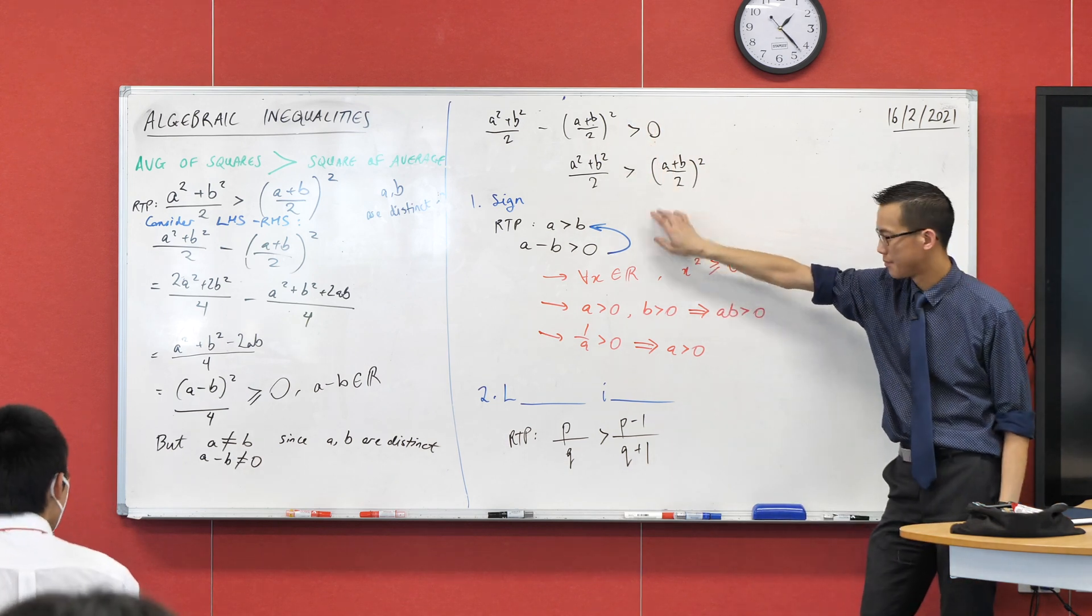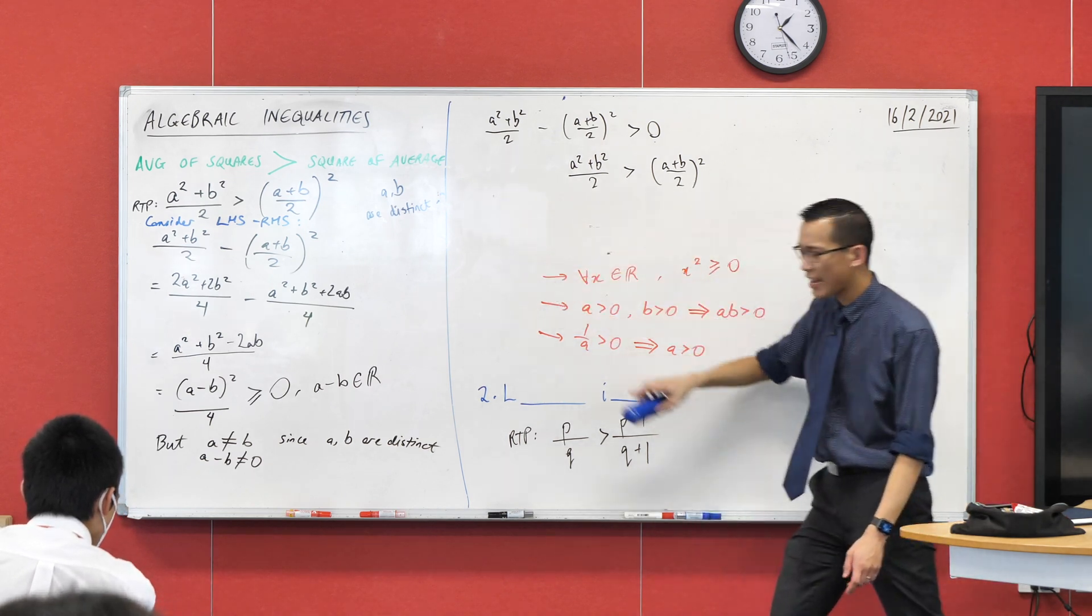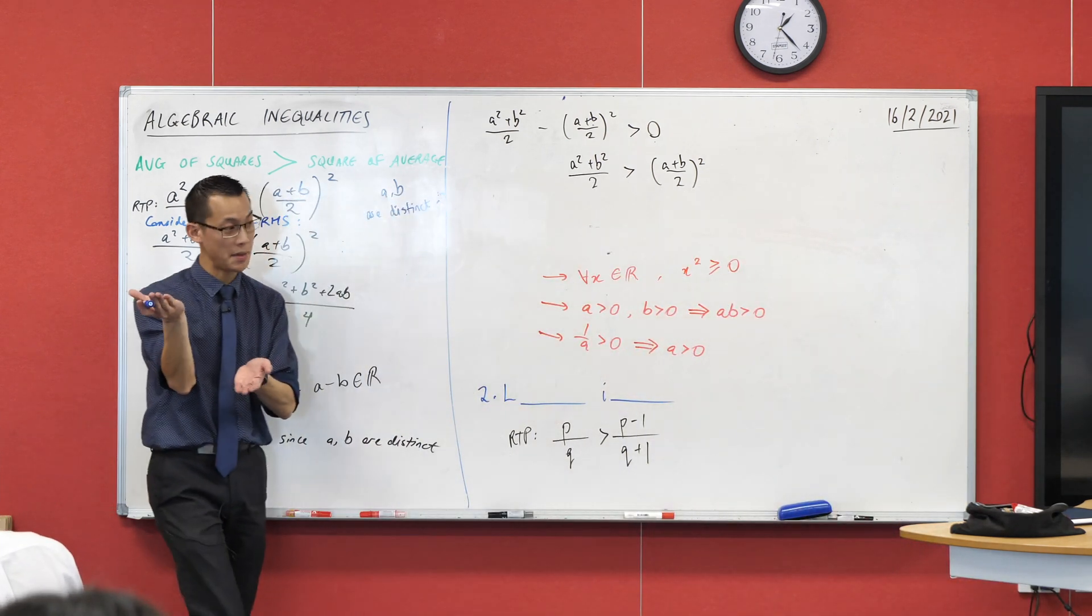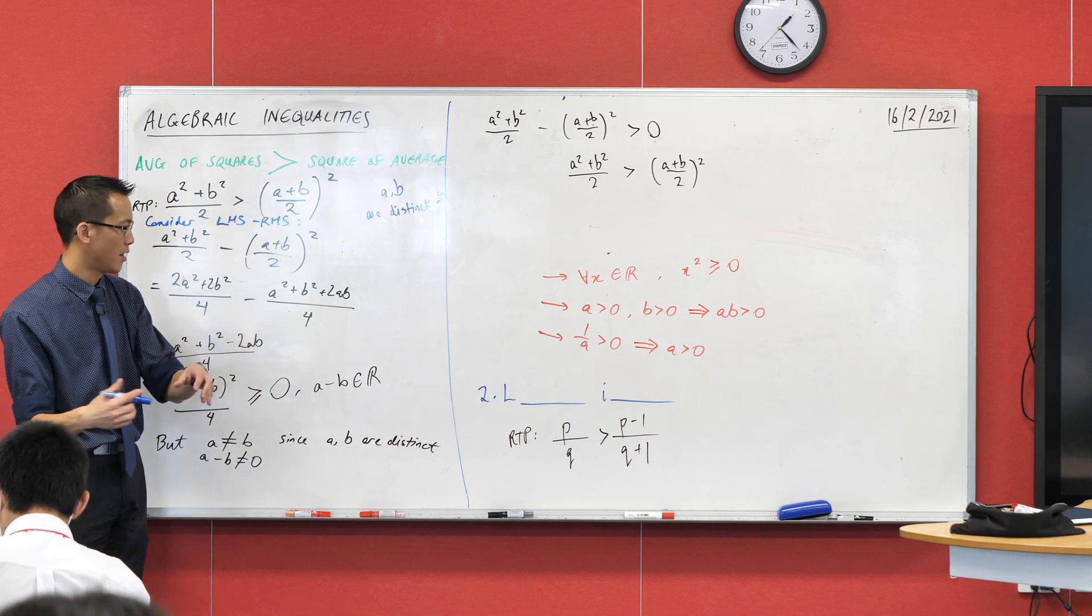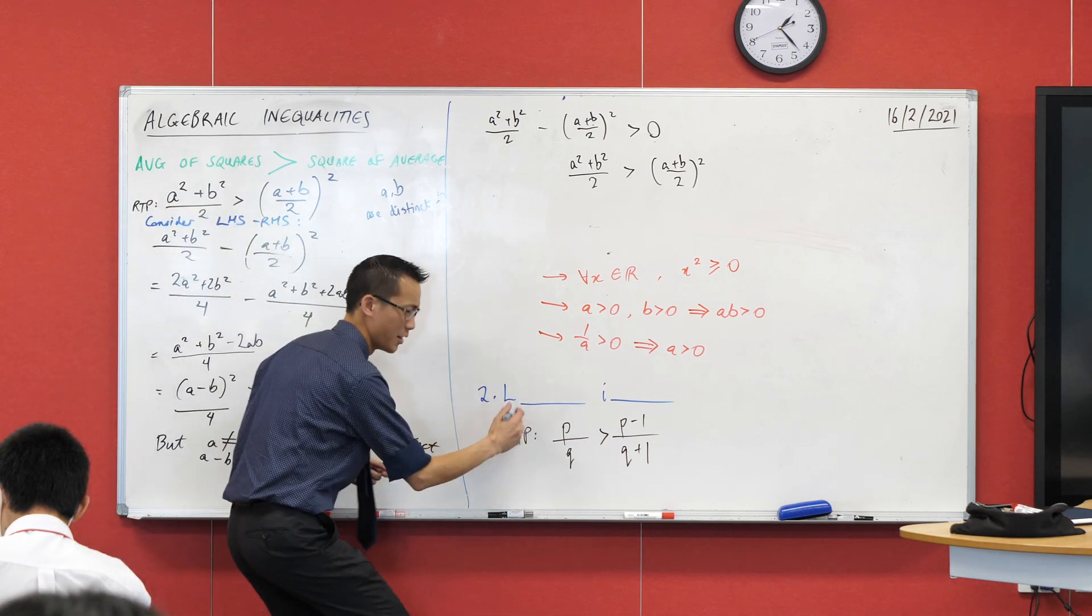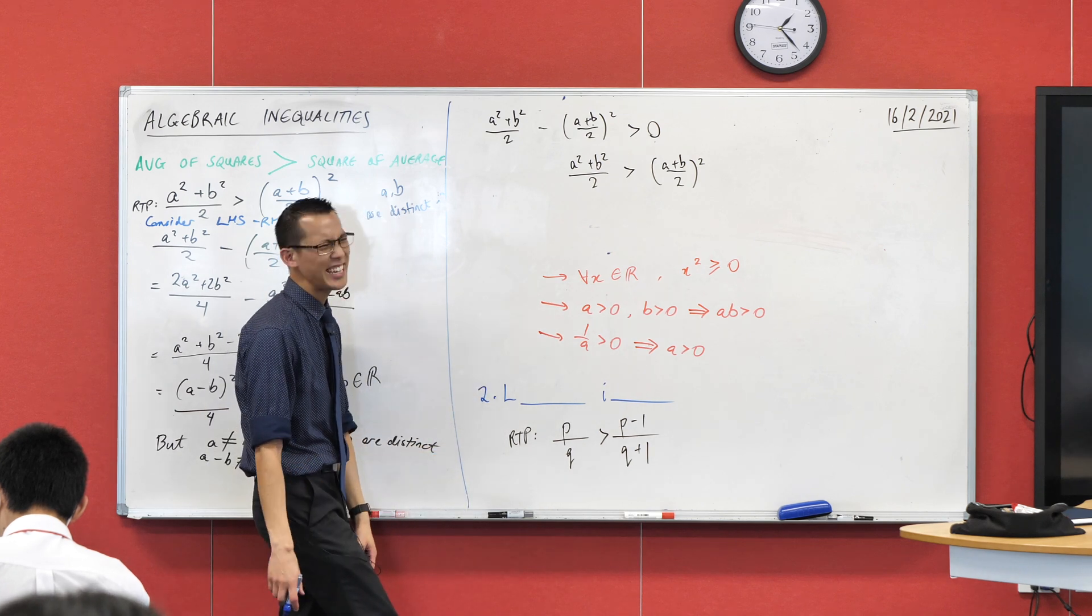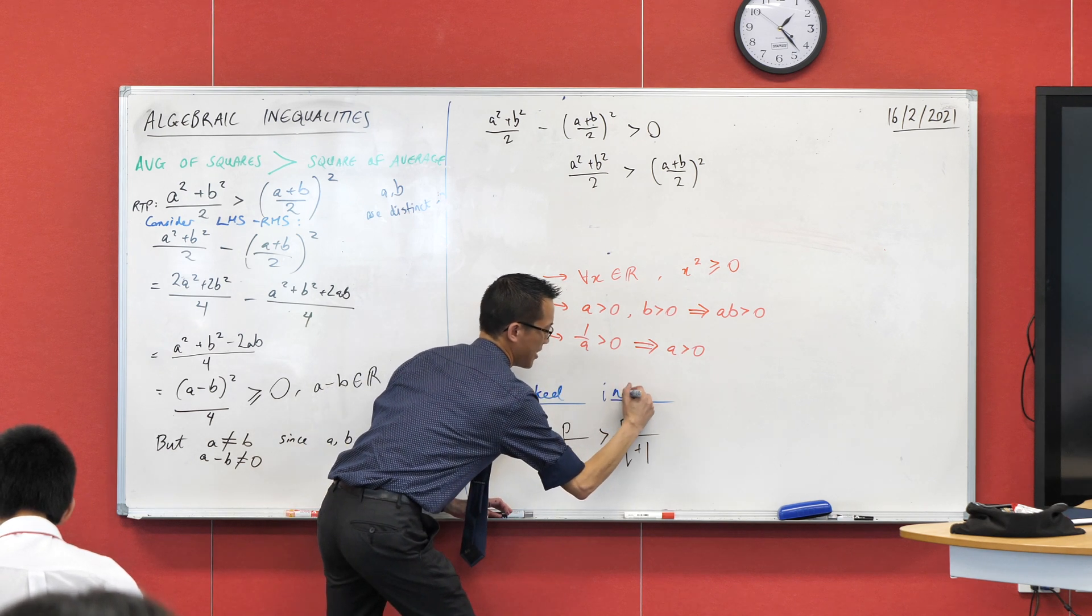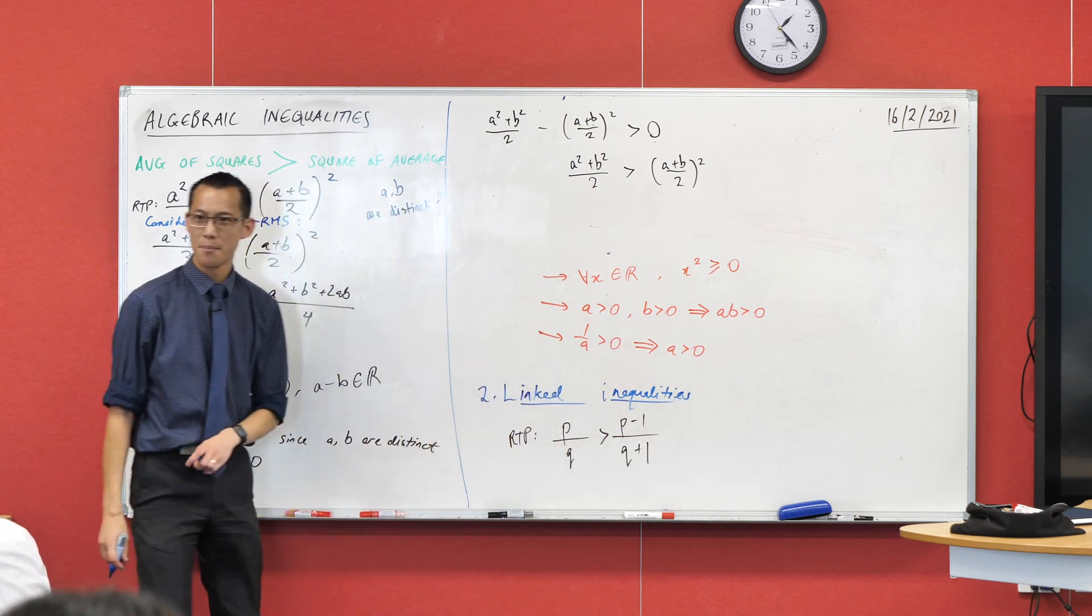This second strategy is that you can not just take two things and compare one to be bigger than the other, you can actually have a string of them. You can link these together. I was going to say like Voltron, but that's too old a reference for you guys. Power Rangers? Anyway, this is the name that I give to this idea that you can link inequalities together.